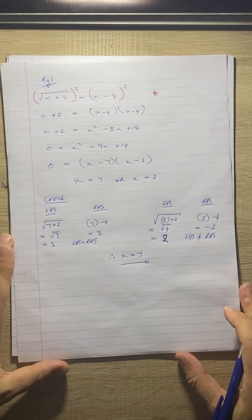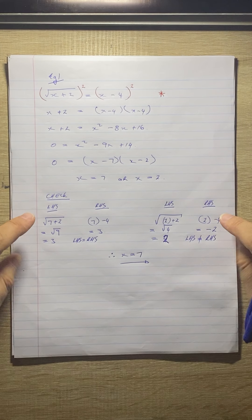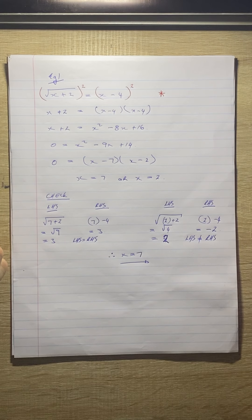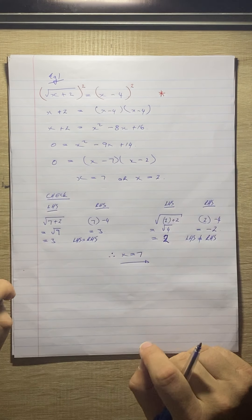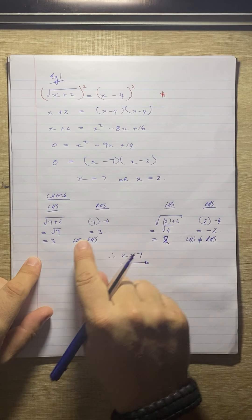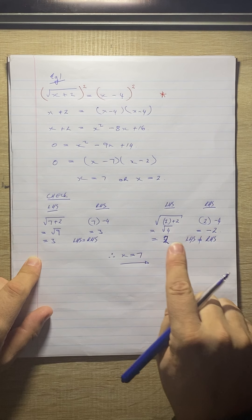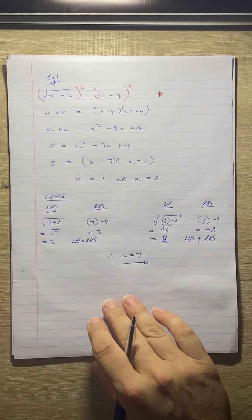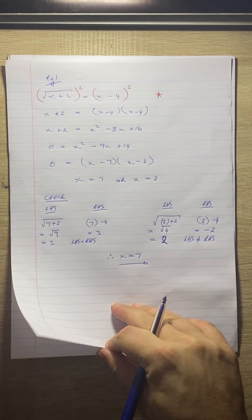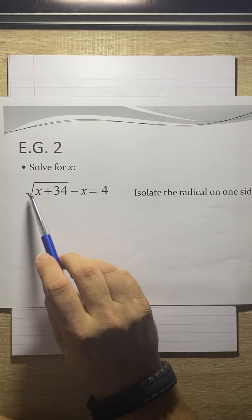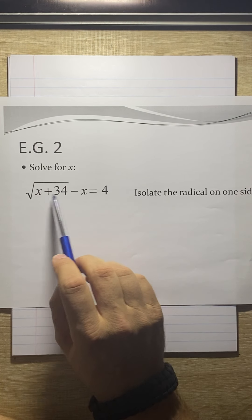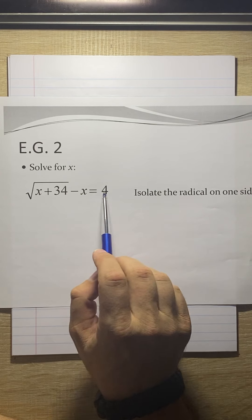You must do this check, Grade 11 — it will show you which ones are solutions or not. Sometimes both come out to be a solution; in this case only one did, but you must check. Going on to example 2: solve for x — the square root of x plus 34 minus x equals 0. Isolate the radical on one side.